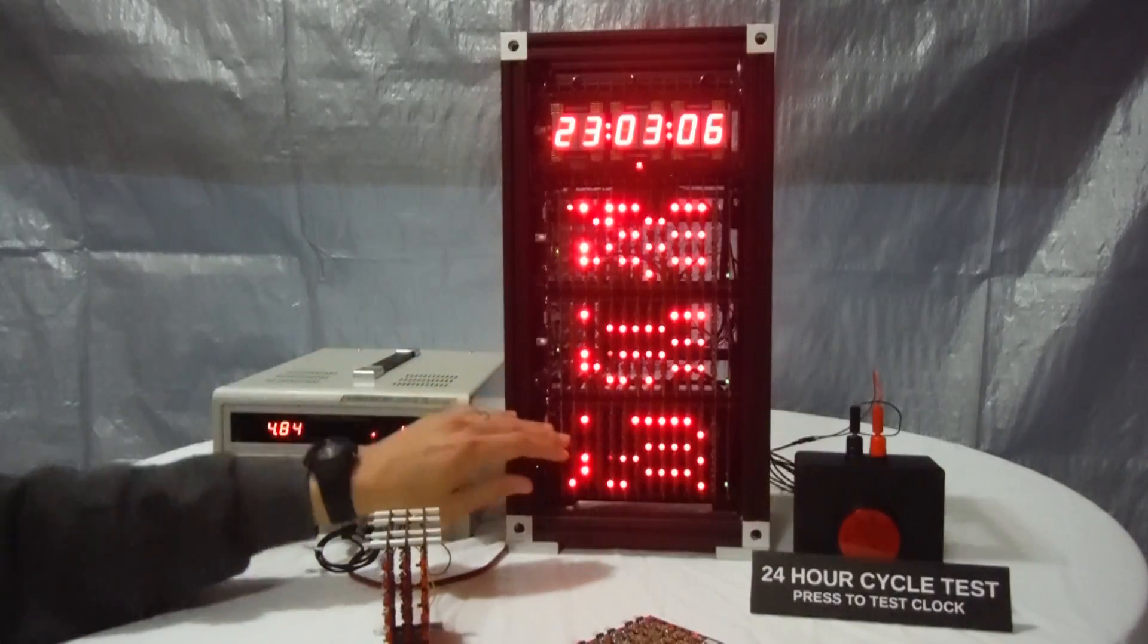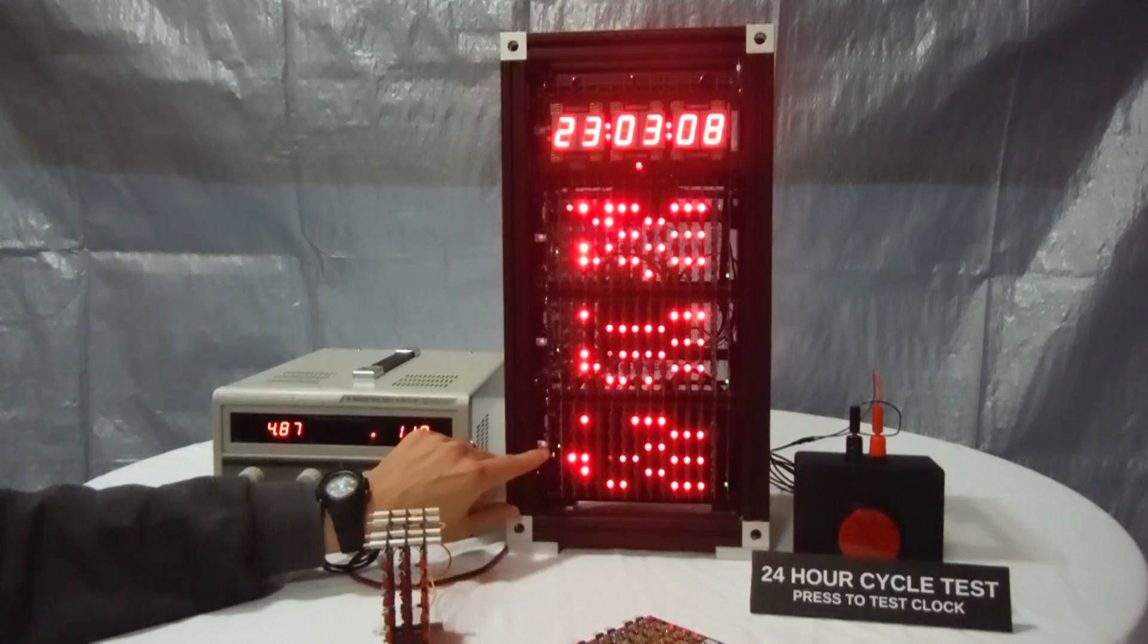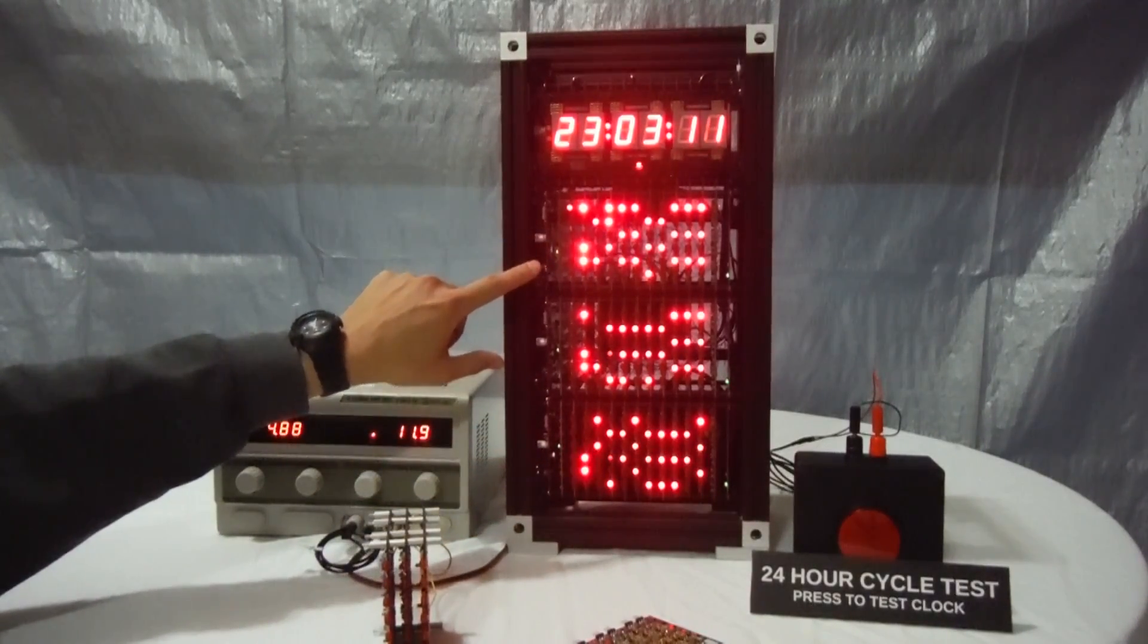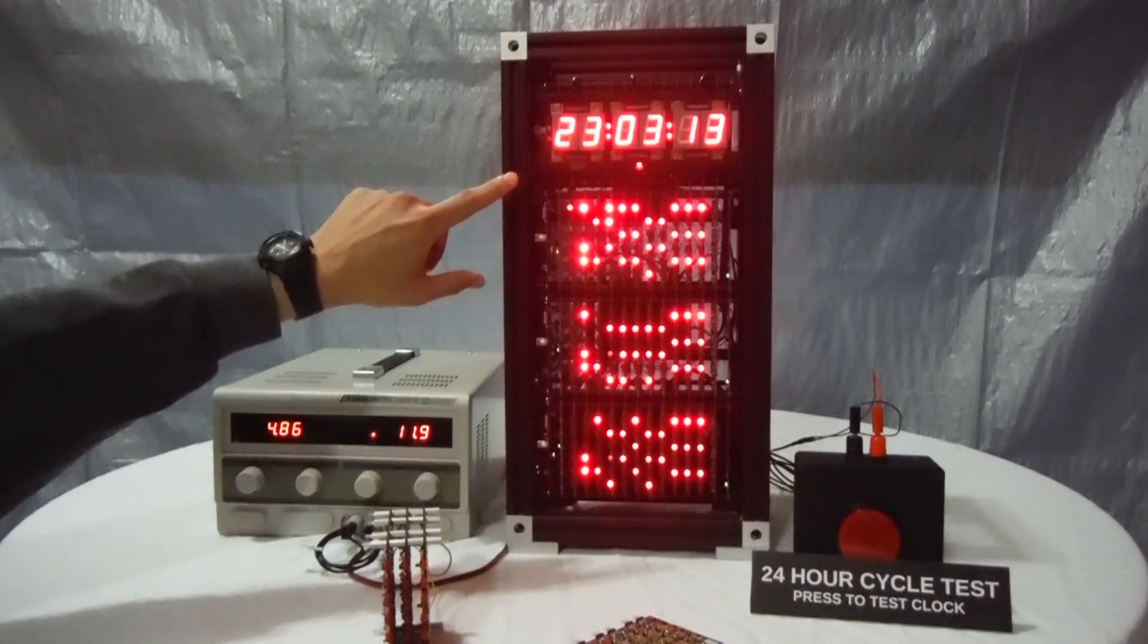You can see the clock has four logic stacks, one for the seconds counter, one for the minutes, one for the hours, and another for the display itself.